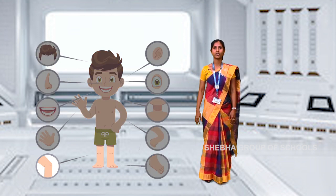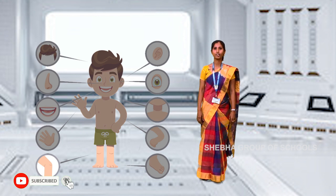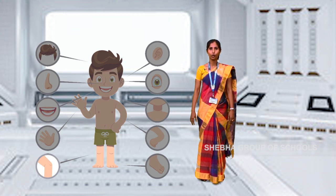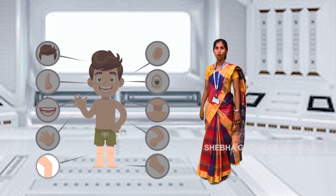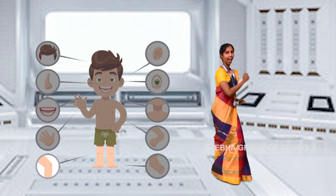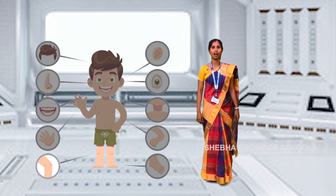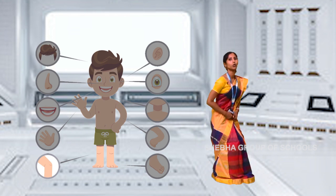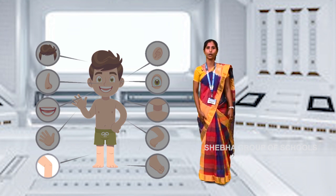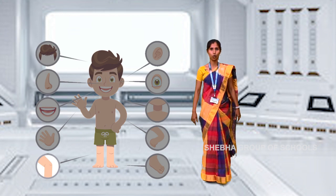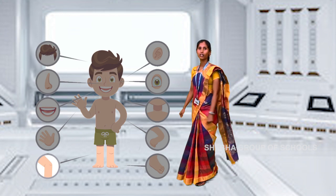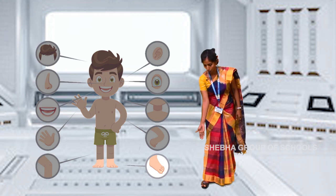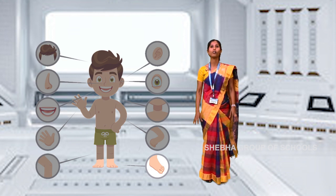Next, legs. How many legs do you have? Count — one, two. You have two legs. We can walk, run and jump with our legs. How many toes do you have? You have ten toes.